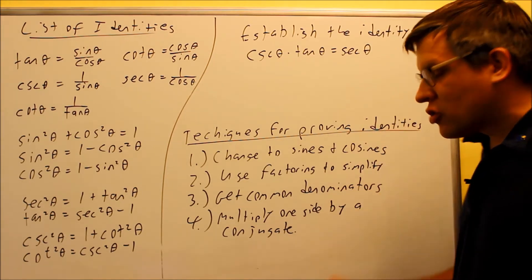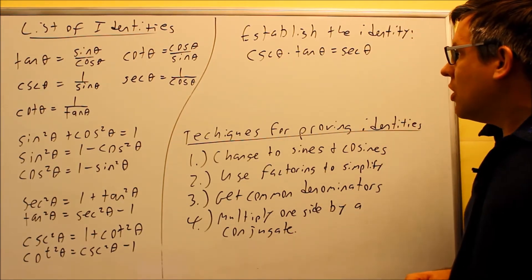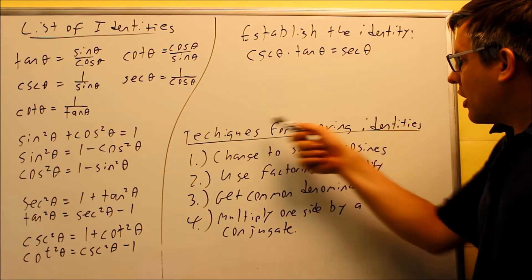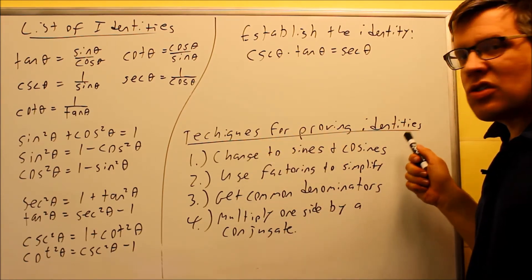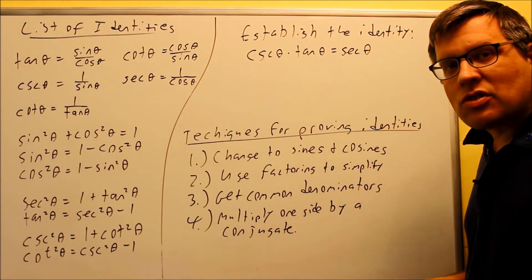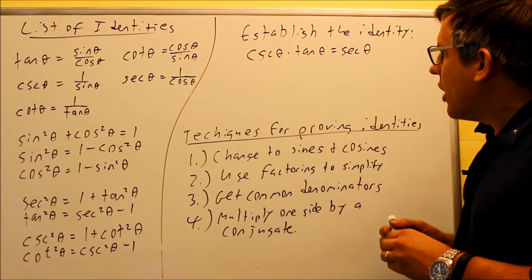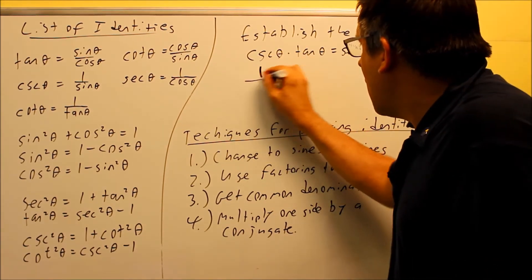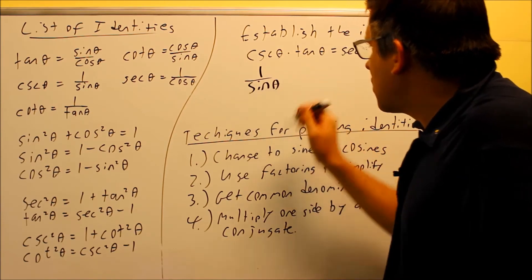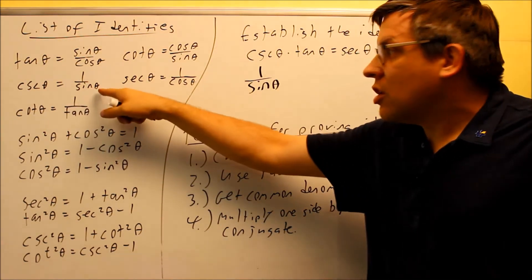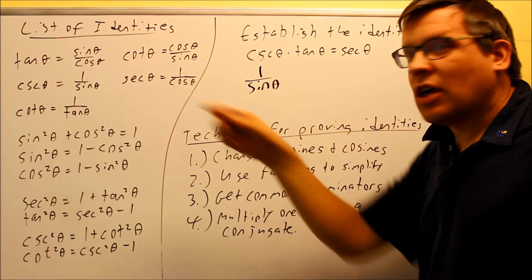So here's the first problem we're going to do, we want to establish the identity. I would look at my techniques here and one of the first things it says to do is change everything into sines and cosines. We're going to use our list of identities to do that. So first, when we do that, cosecant is the same thing as one over sine. That's the way I can take a cosecant and turn it into a sine by using that identity right there.